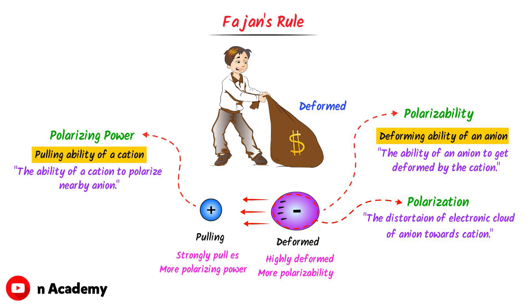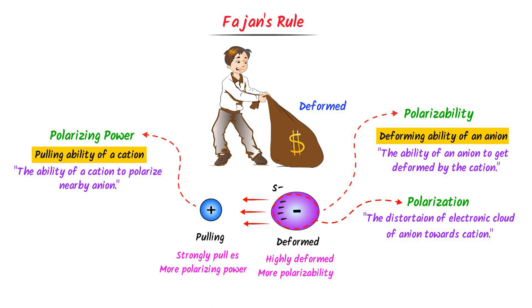As a result of polarization, more electrons are at one side, so a partially negative charge appears on that side. On the other side, fewer electrons are present, so a partially positive charge appears. Thus, we say that this anion is polarized, having a partially positive charged pole and a partially negative charged pole. Note down all these basic and important concepts.